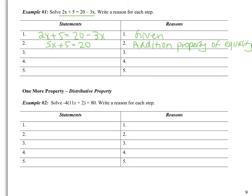Now I still need to isolate X, so I'm going to subtract 5 from both sides. Subtracting 5 from the left side, I'm left with 5X. Subtracting 5 from the right side, I'm left with 15. Because I subtracted, this is the subtraction property of equality.